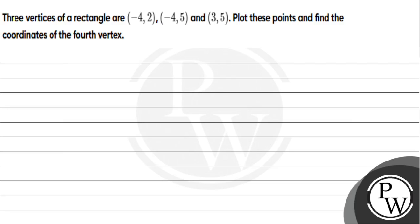So recidivation — this is the three vertices of the rectangle: minus 4,2; minus 4,5; and 3,5. Plot these points and find the coordinate of the fourth vertex.